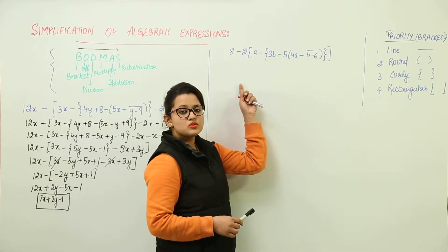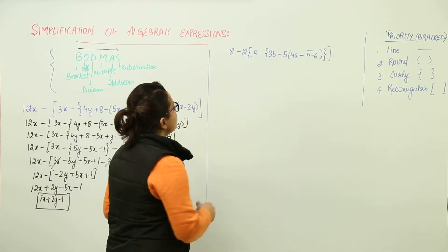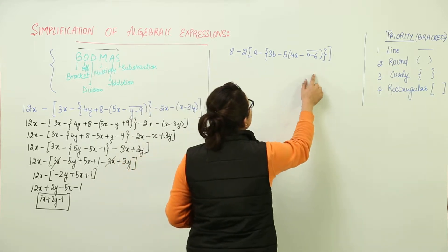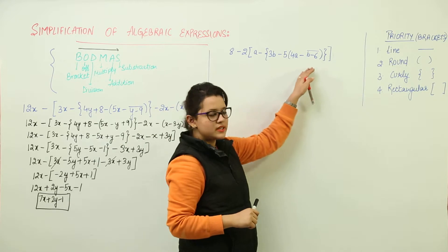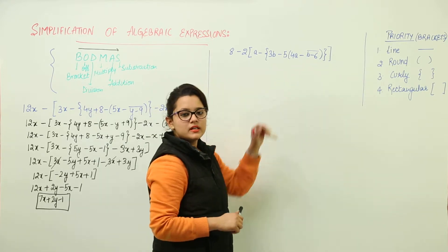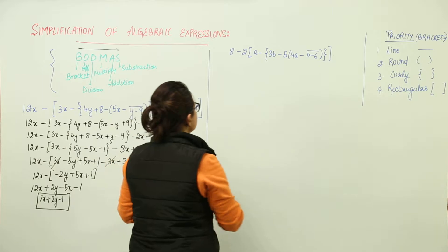Let's do the next question based on simplification only. Here we have this expression having some brackets. So for simplification we are going to remove the brackets first. Because we have the line bracket, we will target the line bracket first. So let us start.